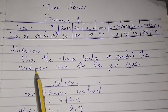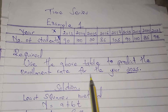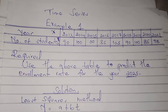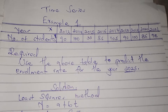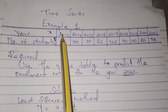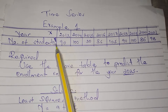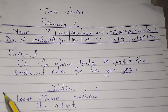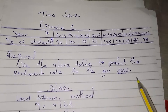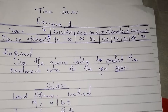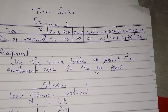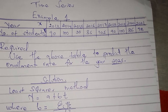They want us to use the above table to predict the enrollment rate for the year 2025. When they ask a question, they may not put the word 'time series' anywhere, but if they give you time and another variable, just know that it's time series. Or if the question includes the year or the period, it means it is about time series.